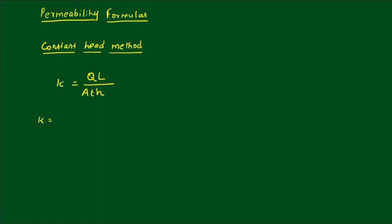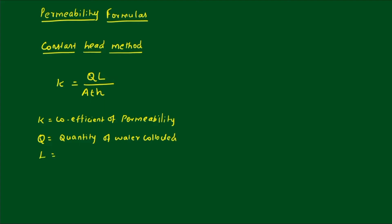So k is equal to the coefficient of permeability. q is equal to quantity of water collected. L is equal to length of sample. A is equal to area of sample. T is equal to time — that is the time required to collect the quantity of water. H is equal to hydraulic head.